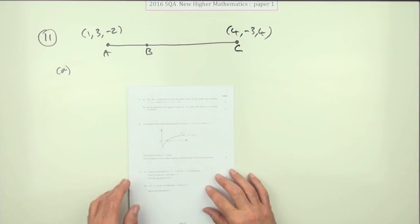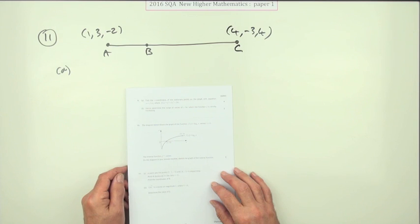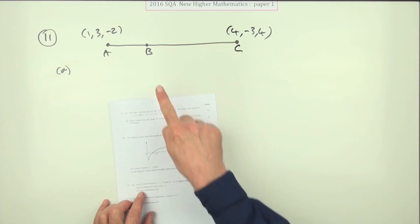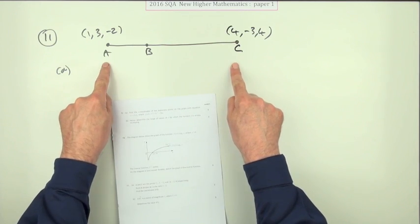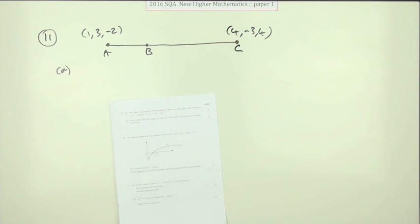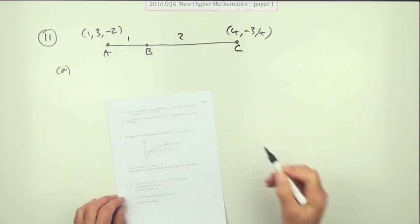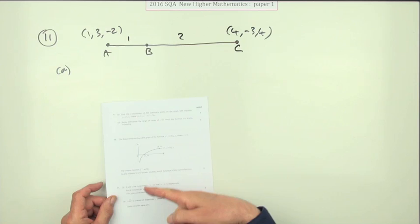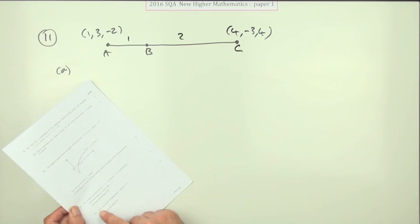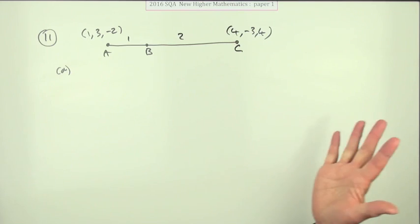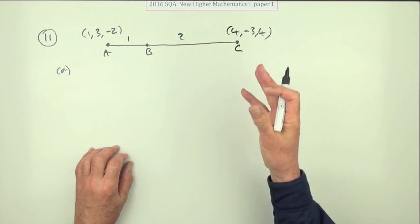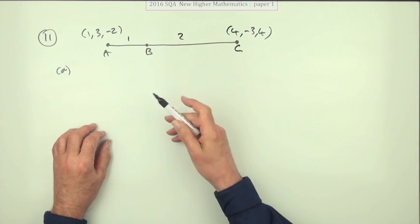So number 11 from the 2016 New Higher paper one. Point B divides the line AC in the ratio 1 to 2. Find the coordinates of B. There are several ways you can do that, but looking ahead to part B it mentions AC, so I would just go for the natural way—the intuitive way, the visual way.